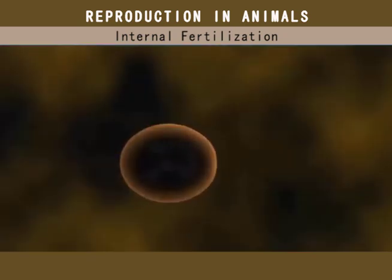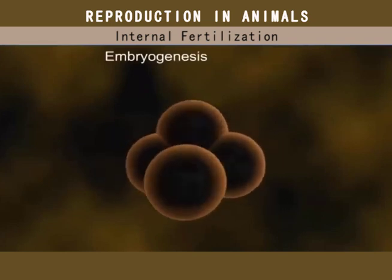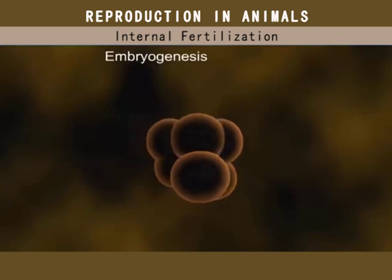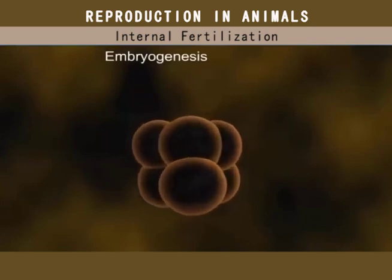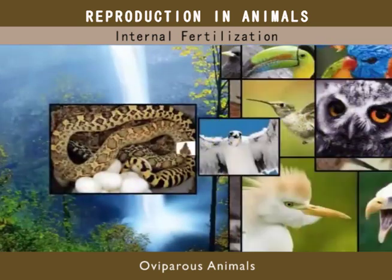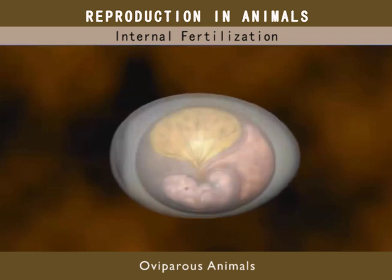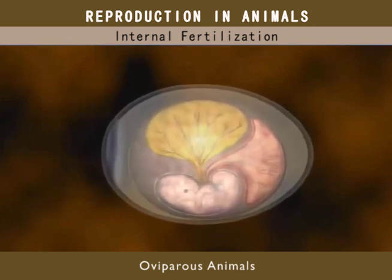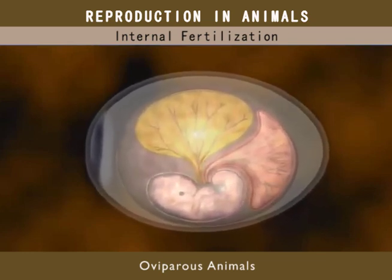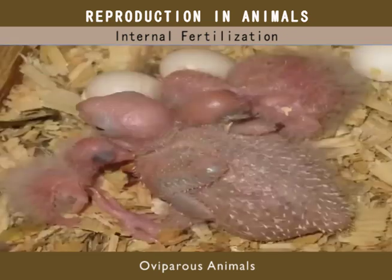After fertilization, embryo development may occur inside or outside the body. In oviparous or egg-laying animals such as reptiles and birds, embryo development takes place outside the body of the female — that is, in eggs laid by these animals. At the end of the incubation period, the young ones hatch from these eggs.